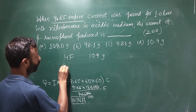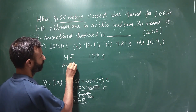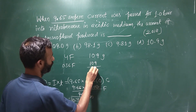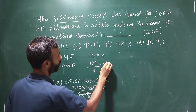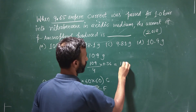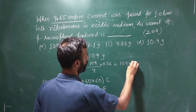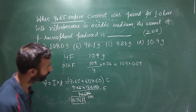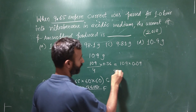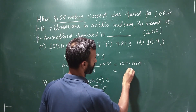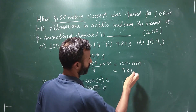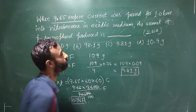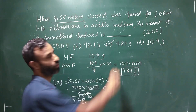So, for 4 faraday, 109 grams are deposited. Therefore for 0.36 faraday, the deposit will be (109/4) × 0.36 = 109 × 0.09 = 9.81 grams. This is option C.